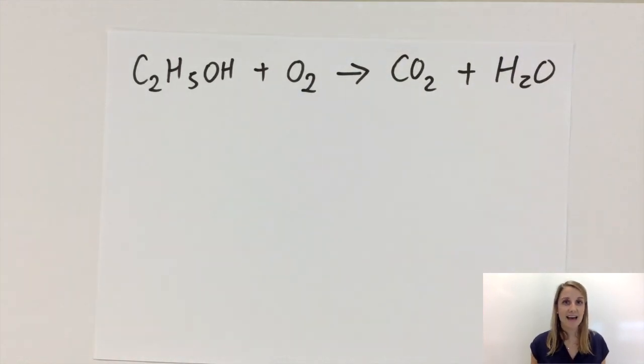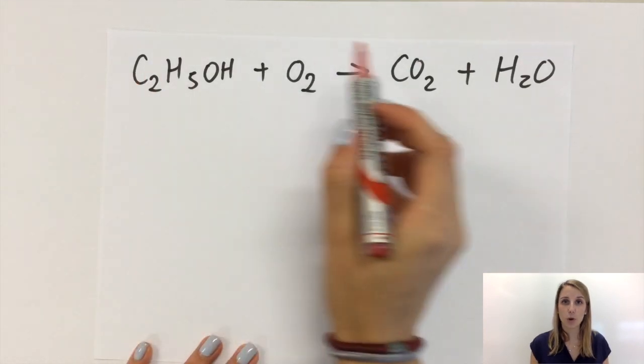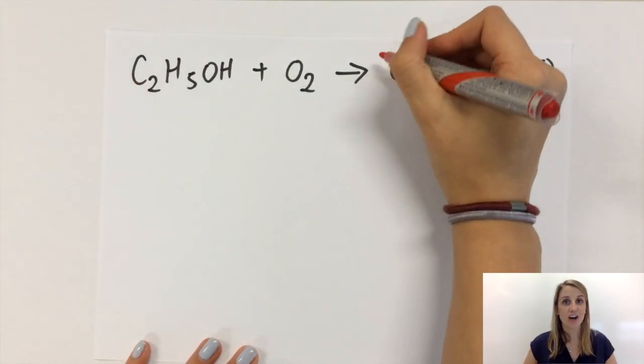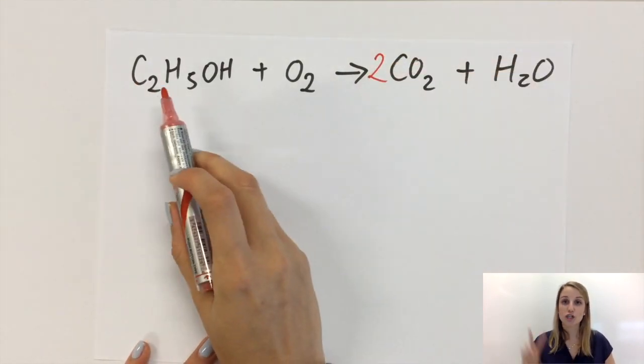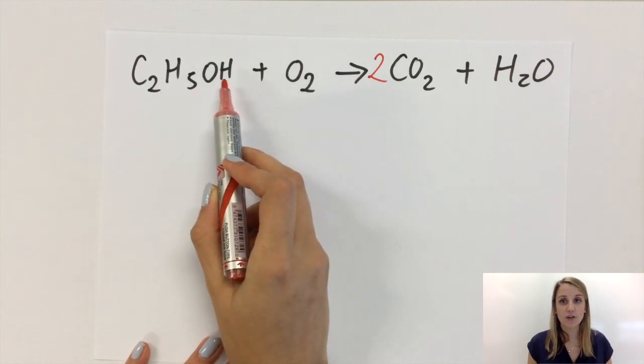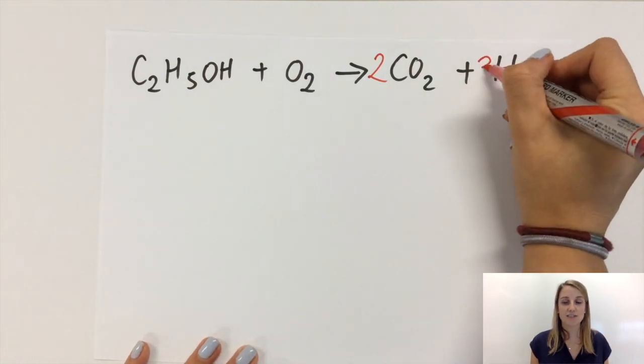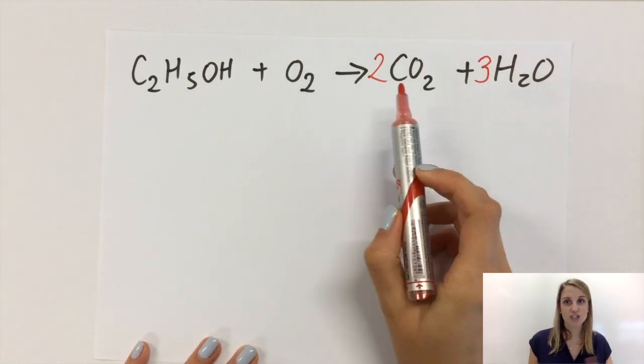To balance this out we follow the same rules as before, so you balance the carbon first, so that means I need two CO2's. Then I'm going to balance the hydrogen, so I've got six on the left and so that means that I need three H2O's to balance the six on the right.